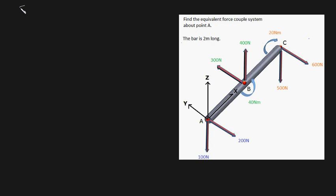To do that, you need to find the net force, and you need to find a net moment about point A. Let's first find the net force in the x direction. Notice that each of these forces are purely in the y and z direction, which means that the sum of forces in the x direction is zero Newtons.